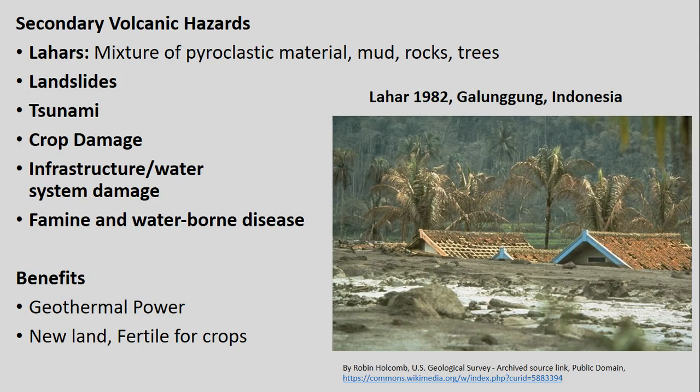Other secondary hazards include tsunamis — a big one we'll cover especially when we talk about earthquakes in a separate video — as well as a whole set of tertiary or third-level cascading effects, like crop damage, infrastructure damage, and famine. We can see just one example here, this lahar — kind of this whole mixture of mud and slurry that comes down and can bury places and infrastructure.